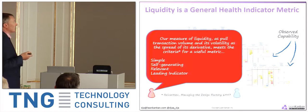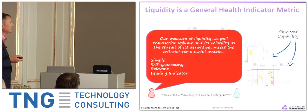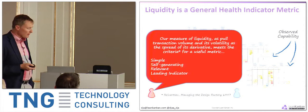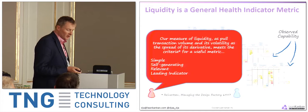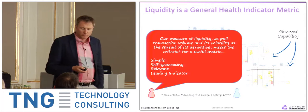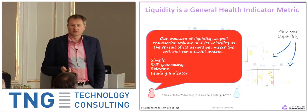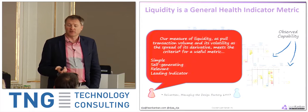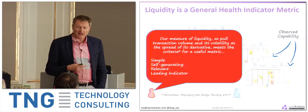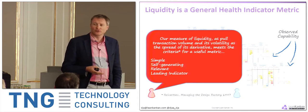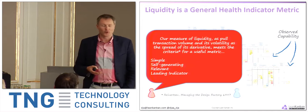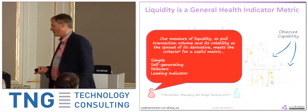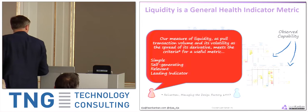Liquidity and volatility are general health indicator metrics — like your blood pressure, pulse, and weight. If there's a dramatic change in those numbers, something is going wrong with your health and your doctor will want to know about it. Now I'm going to demo — I'll need to switch computers.